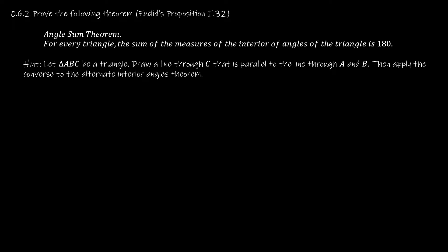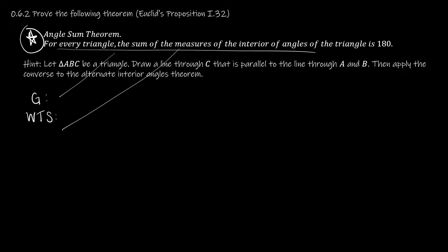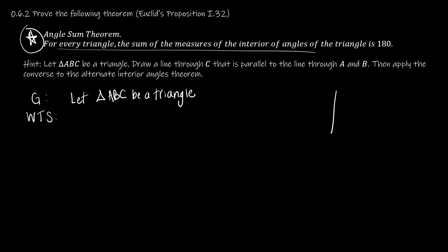There are two things I'm going to look for when you complete a proof, based on what we are asked to prove: a given, and a 'what to show' or 'what to prove.' Those two things should come from the theorem itself. I don't want you to just recopy what's written — I want you to make it more specific. Since it says 'for every triangle,' for the given I'll say: let triangle ABC be a triangle. I'll also draw triangle ABC.